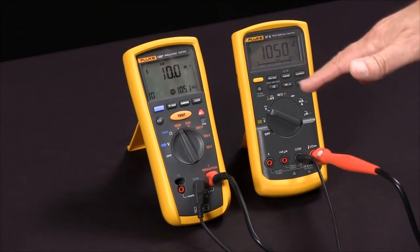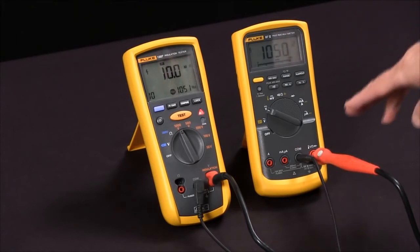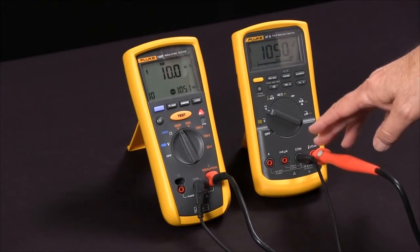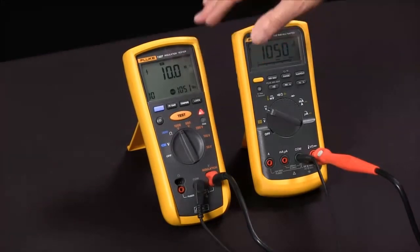Once you've completed the test, allow the meter to remain connected for a second, so it can discharge any charge that is built upon the test specimen. That's how we measured polarization index and dielectric absorption ratio with the Fluke 1507 installation tester.